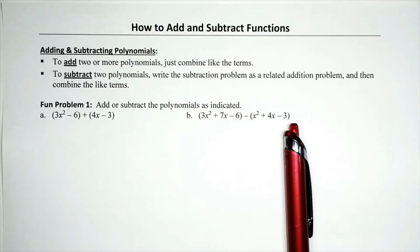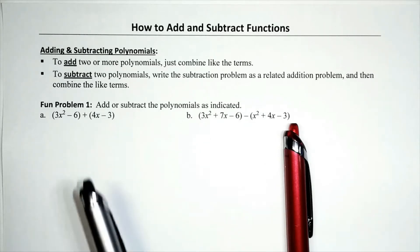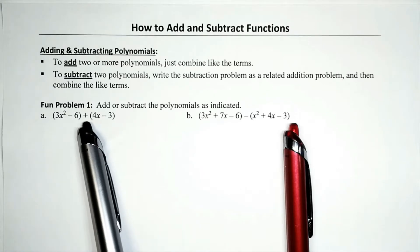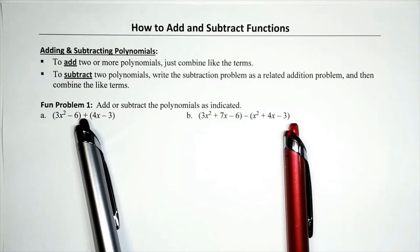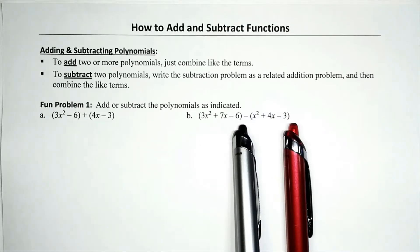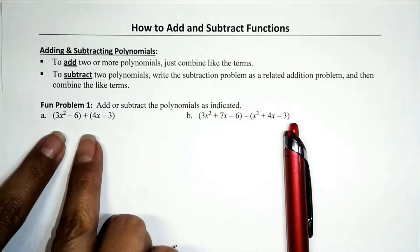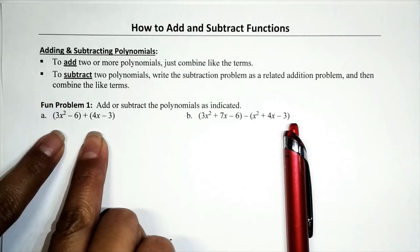Let's knock out problem number one. The directions read: add or subtract the polynomials as indicated. How do I know if I'm supposed to add or subtract? Look at what separates the two polynomials. If an addition sign separates them, it's an addition problem. If they are separated by a subtraction sign, then you are to subtract.